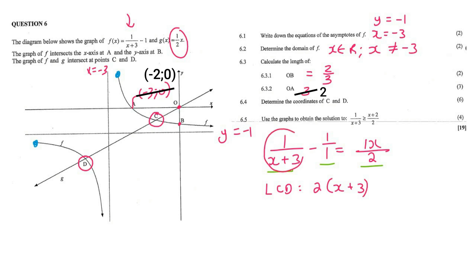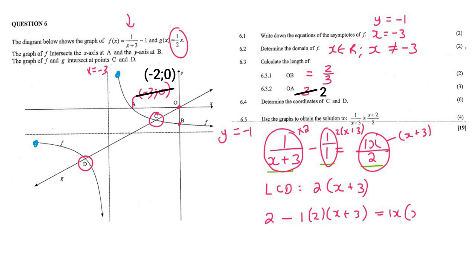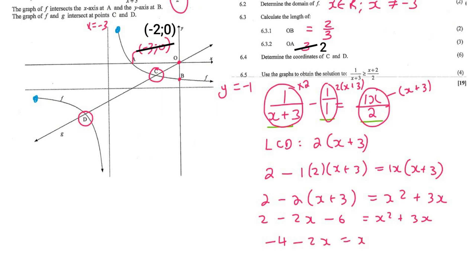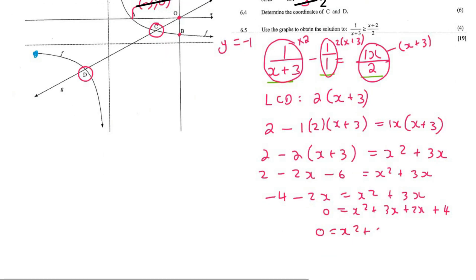This 1 needs to be multiplied with 2, this one needs to be multiplied with both, and this one needs to be multiplied with x plus 3. That gives us 2 minus 1 times 2 times x plus 3 equals 1x times x plus 3. Expanding gives 2 minus 2x minus 6 equals x squared plus 3x, which simplifies to minus 4 minus 2x equals x squared plus 3x. Taking everything to the right hand side gives x squared plus 5x plus 4.